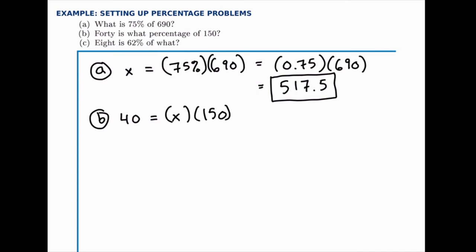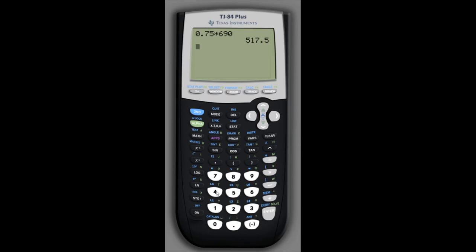Now, to solve for x, we need to divide both sides by 150. So, we get 40 divided by 150 equals x. So, we need to go back to the calculator and divide 40 by 150.